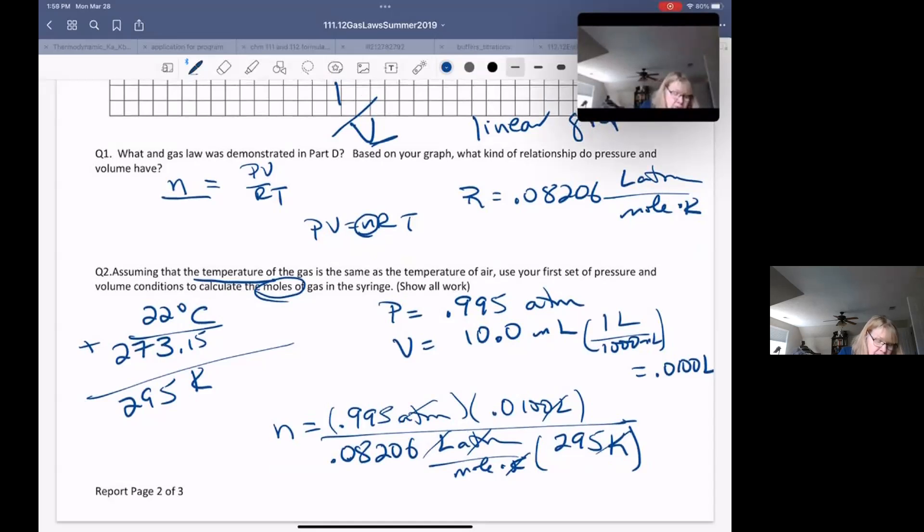And when I do the math on this one, I get a value of 0.000411 moles. And I've got three sig figs on that one. So this is how you're going to fill this out.